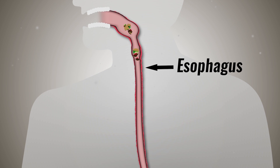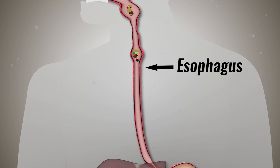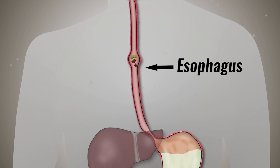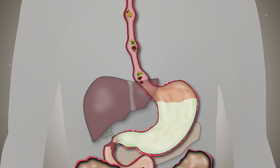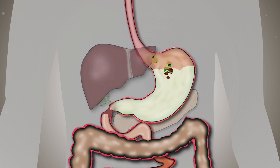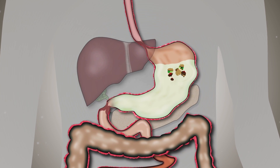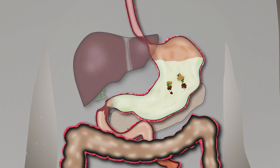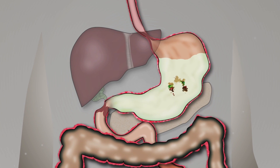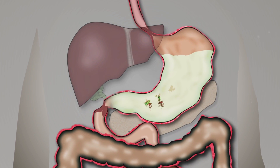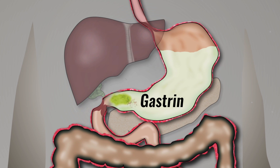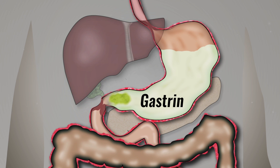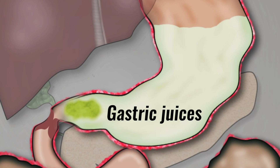When you swallow, food moves into the esophagus, where continual waves of involuntary contraction push the food into the stomach. When food enters the stomach, its presence initiates the release of gastrin, which in turn releases gastric juices.